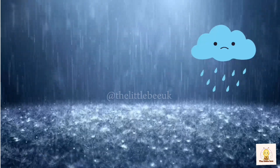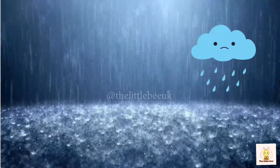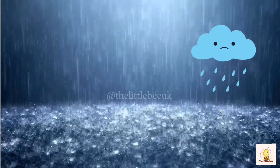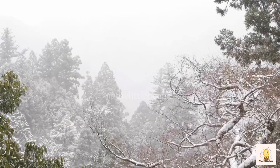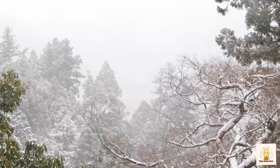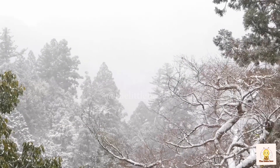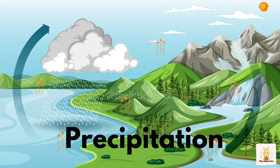These water drops crash into each other and become bigger drops of water. At some point they will end up falling to the ground in the form of rain or even snow. This stage of the water cycle is called precipitation.